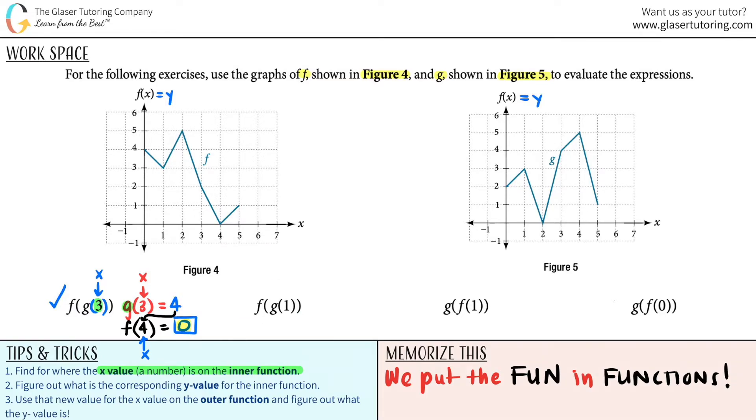You got to work inner to outer. So g of 1. This is the x value. I'm going to the g graph. The x value was 1, so that's over here. The graph is all the way up here. What's the corresponding y value? It's 3. We did the first part, the beginning part. Now we just got to go to the outer one.